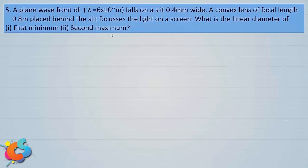Here is the next question. A plane wavefront of wavelength 6×10⁻⁷ meter falls on a slit 0.4 millimeter wide. A convex lens of focal length 0.8 meter placed behind the slit focuses the light on a screen. What is the linear diameter of the first minimum and second minimum?